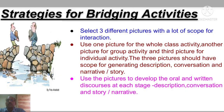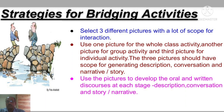Now let us come to strategies for bridging activities. The first strategy: select three different pictures with a lot of scope for interaction. Use one picture for the whole class activity, another picture for group activity, and a third picture for individual activity. The three pictures should have scope for generating description, conversation, and narrative or story. The third strategy: use the pictures to develop the oral and written discourses at each stage — description, conversation, and story or narrative.